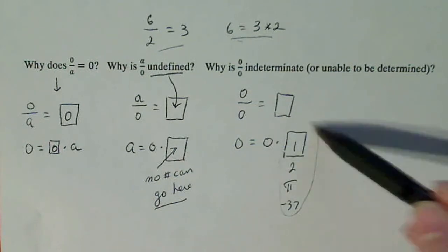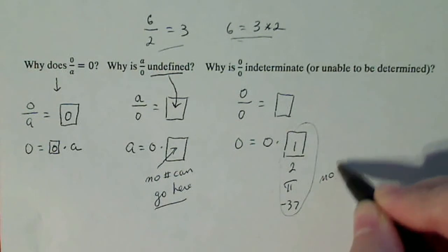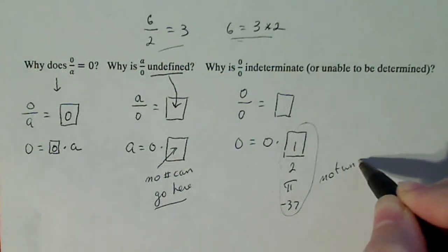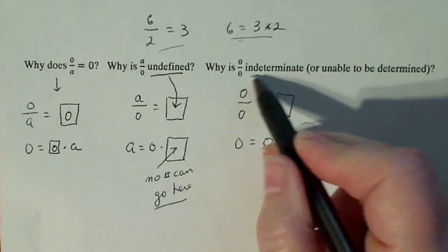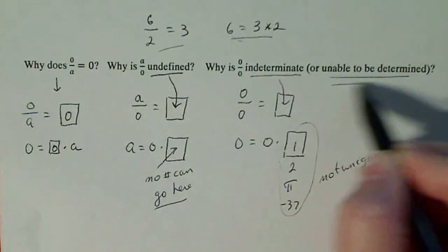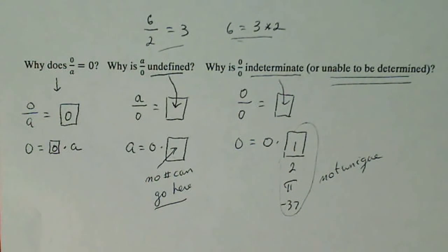So since the number here is not unique, in other words, there's a bunch of them that can fit in there, that's why we say this is indeterminate. I cannot determine. I'm unable to determine which number goes in the box. So it's definitely not 1. It can be 1, but it can be any other number, so it's indeterminate.